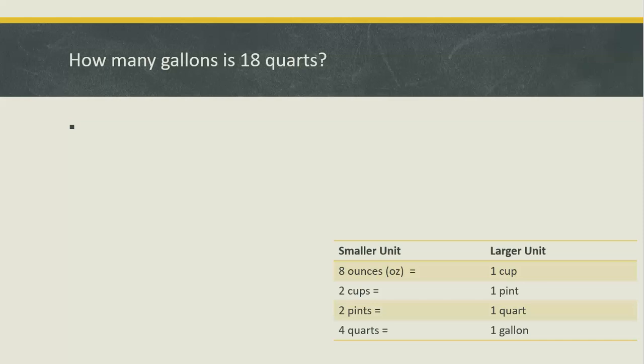In our next problem, let's change from quarts to gallons. How many gallons is 18 quarts? So the unit we are starting with is 18 quarts. We're switching to gallons. Find that on your chart. Quarts are smaller than gallons, so again, we'll divide.